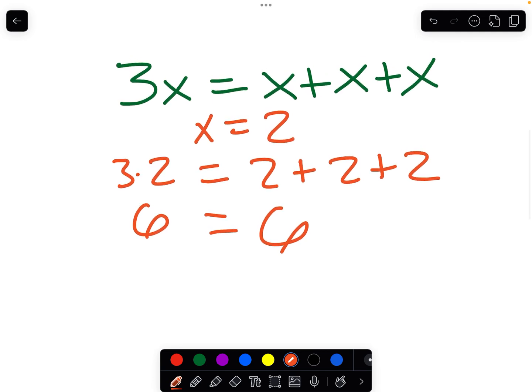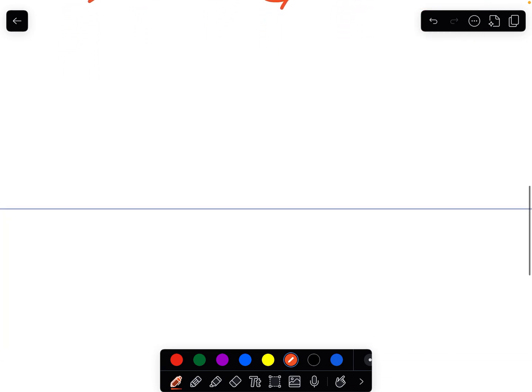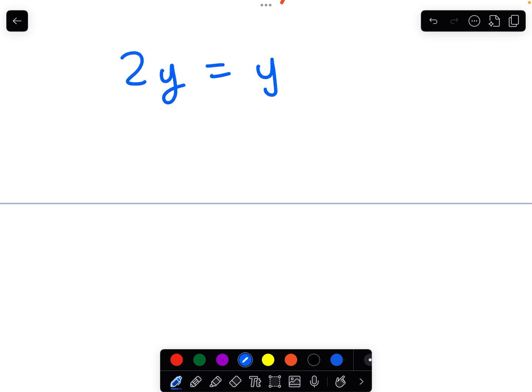So one way to think about it is that on each side of the equation, if there are equivalent expressions, they will ultimately have the same value at the very end. Other equivalent expressions might be 2y equals y plus y.